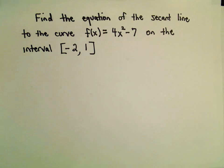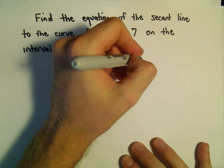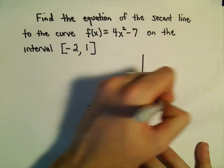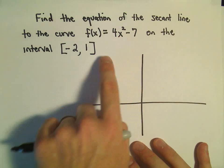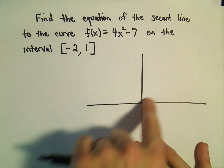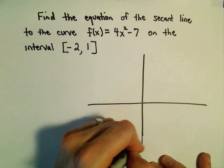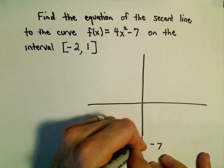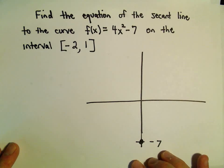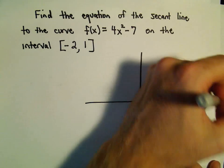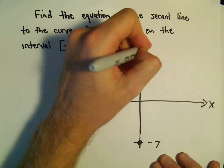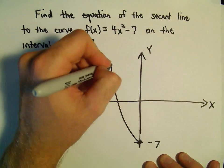I'm gonna make a very rough sketch here of my function. x² is a parabola opening upwards. The 4 would just make it a little more narrow and then the -7 would just shift it down. There's -7, that would be the y-intercept on our parabola here, and then it just kind of gets big pretty fast.